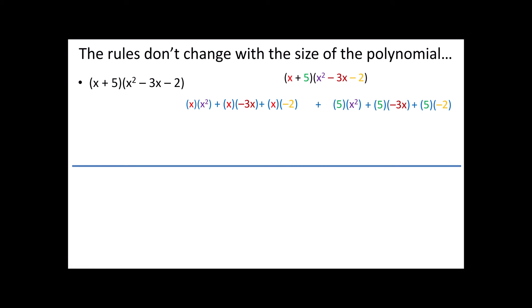This is what our problem is going to look like. We're just going to walk through and simplify everything. Notice we have a series of multiplications and additions throughout. Order of operations says I need to do all the multiplication first. x times x squared is x to the third. I then have x times negative 3x, which is negative 3x squared. And then x times negative 2, which is negative 2x. Over here, 5 times x squared is 5x squared.